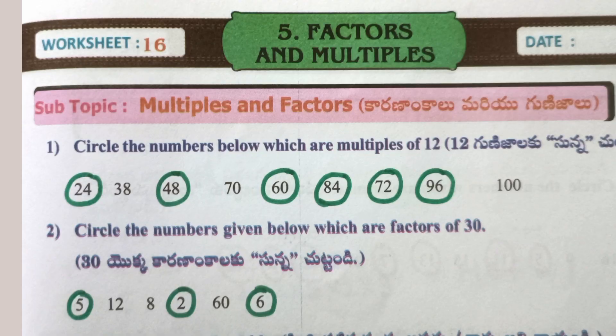Worksheet 16: Circle the numbers below which are multiples of 12: 24, 48, 60, 84, 72, 96. Circle the numbers given below which are factors of 30: 5, 2, 6.